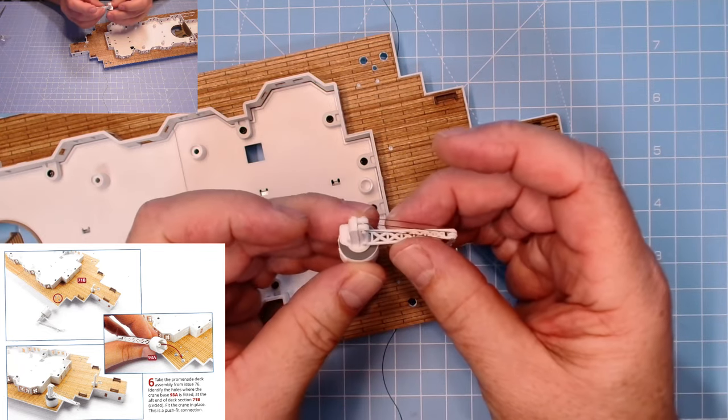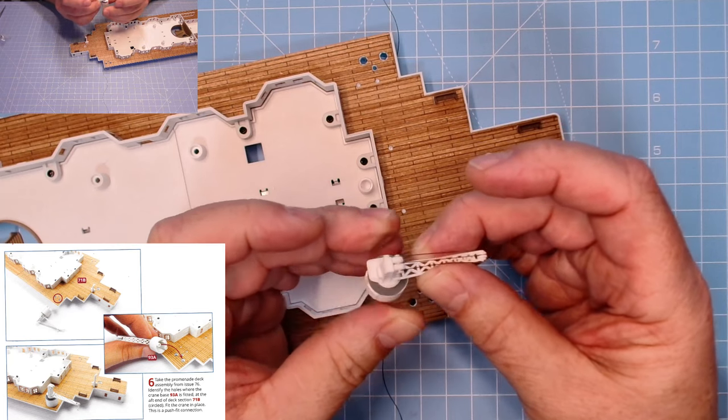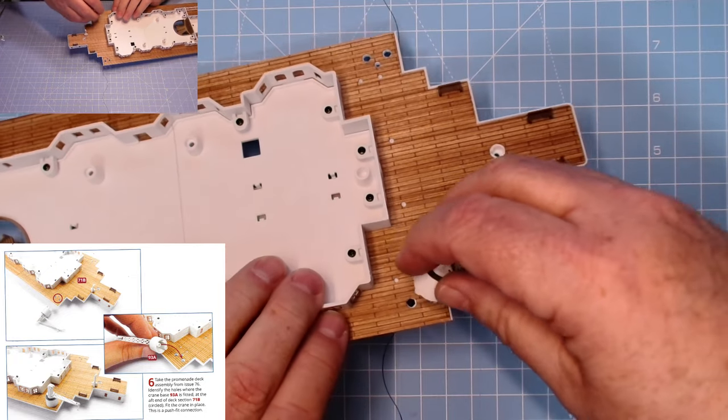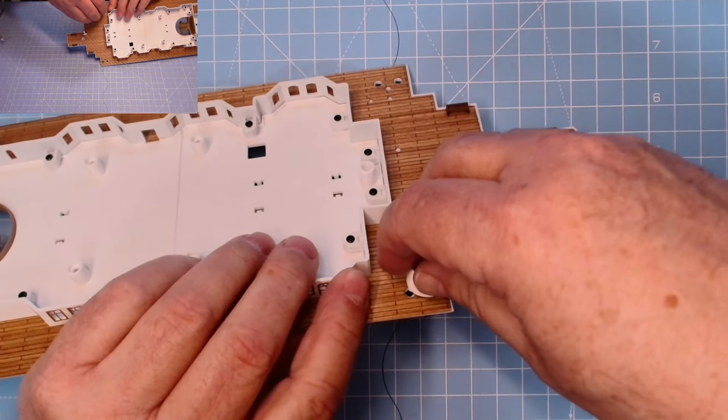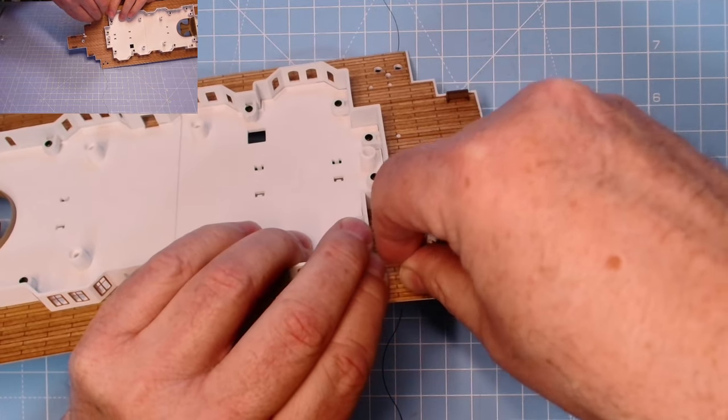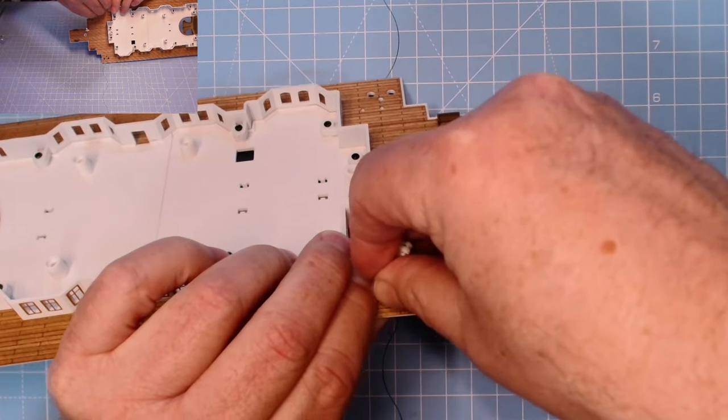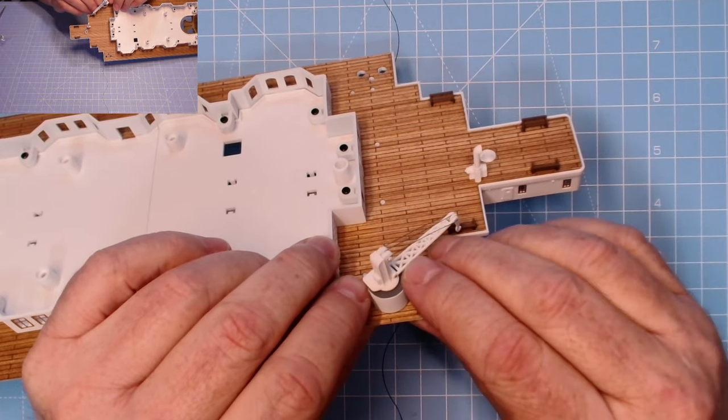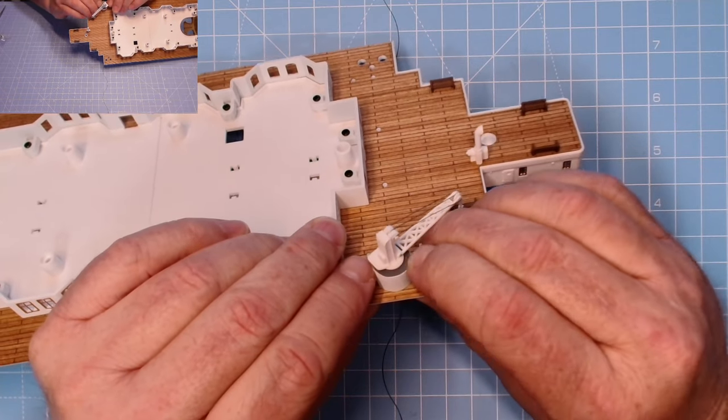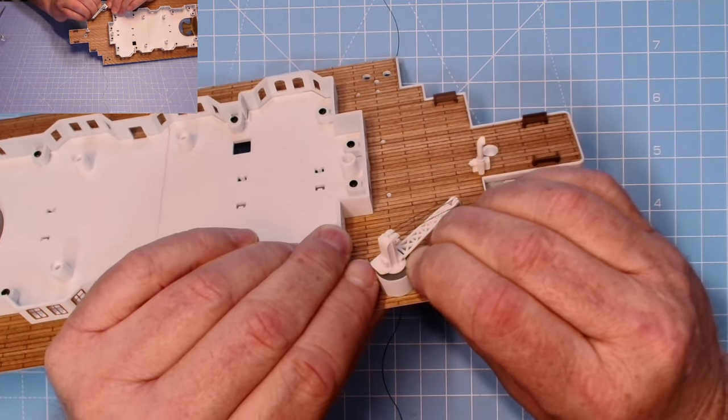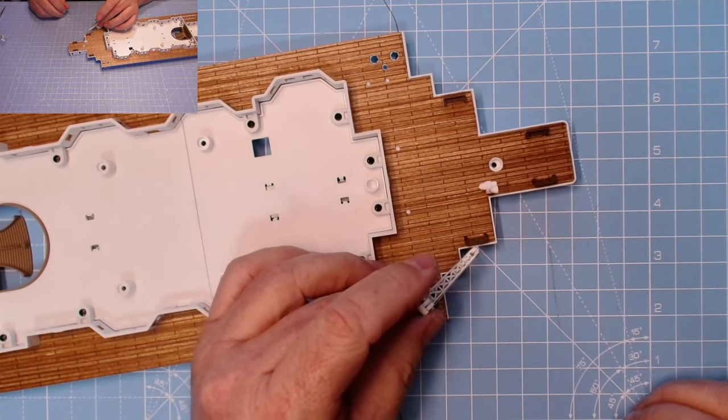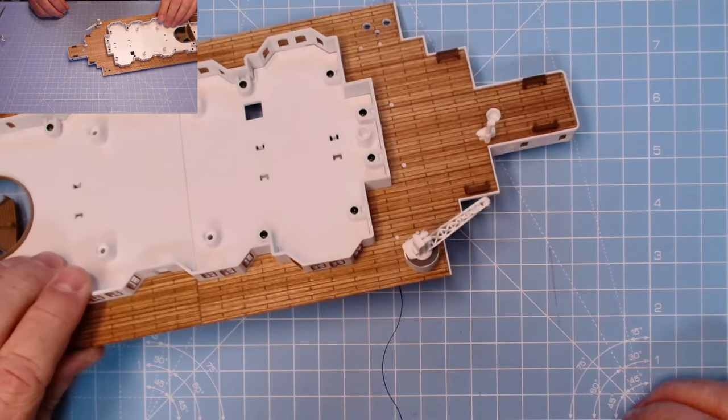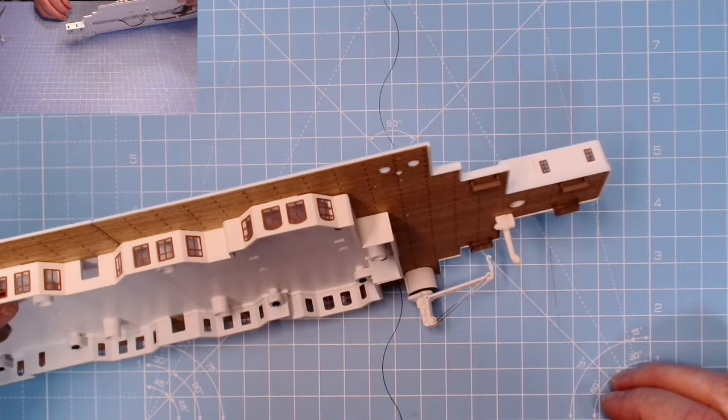Here we have the promenade deck. Now this is just the push-fit connection. Obviously you want that to be able to rotate like that. That's brilliant. One location peg in there and just push it into place. And this is a tight fit. There we go, that goes around there. Excellent. There we go, so that's the first crane in place.